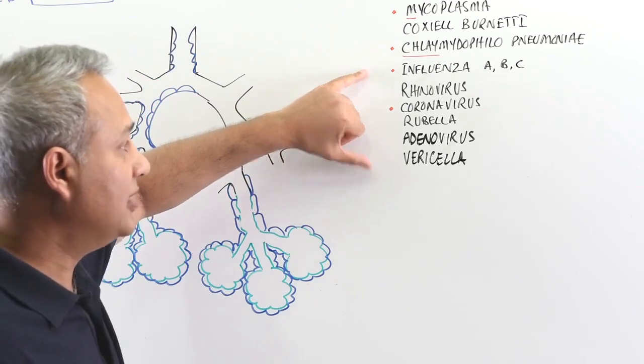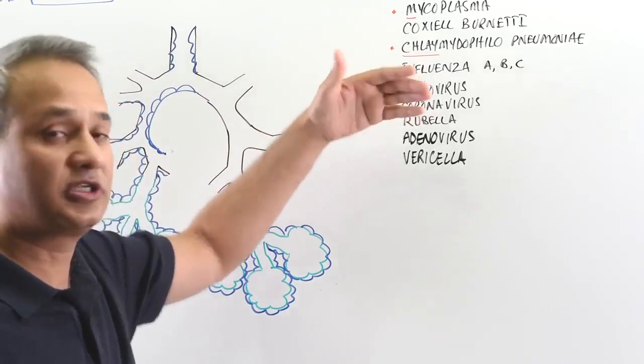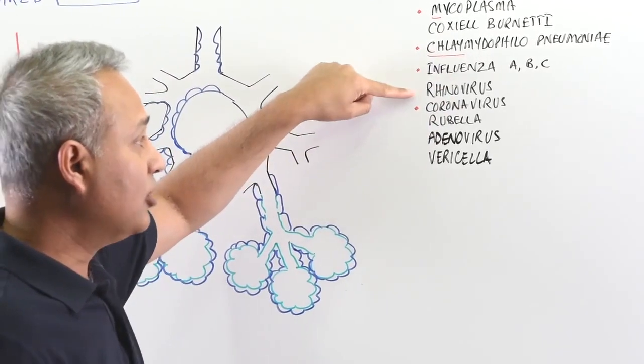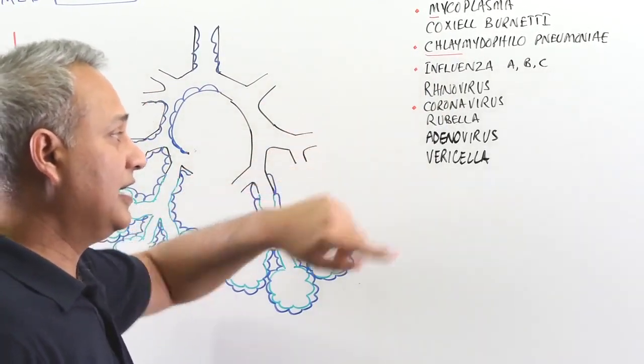So on the viral side, which is more prevalent: influenza, common flu, type A, B, and C and mostly type A, rhinovirus, coronavirus, rubella, adenovirus, and varicella.